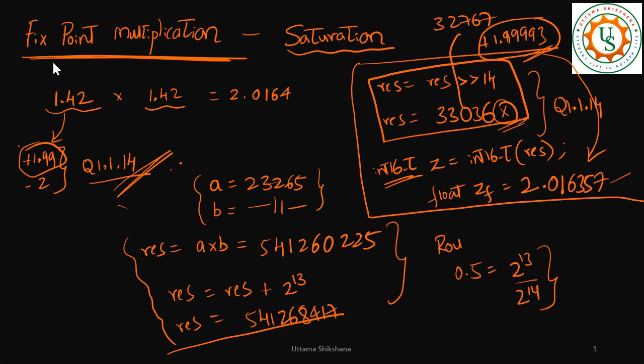When you multiply two numbers there can be saturation, and this is one such example. If we try to retain the same Q format we will have to live with a huge loss, and your SNR will go down — that is not a good idea. We should try to avoid this saturation. Looking at 2.0164, it does not fit in Q1.1.14 but it can fit in Q1.2.13.